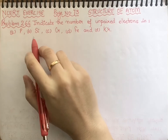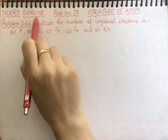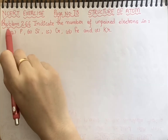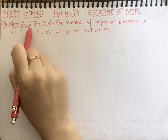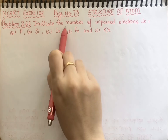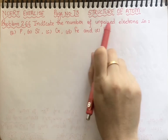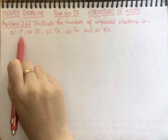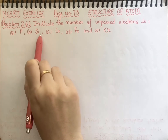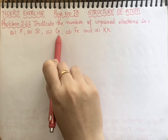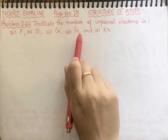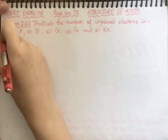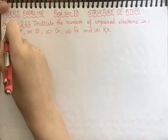Students, we have NCRT exercise on page number 73, problem number 2.66. We are asked to indicate the number of unpaired electrons in the following: first case phosphorus, second silicon, chromium, iron, and krypton. So let's see their electronic configuration.